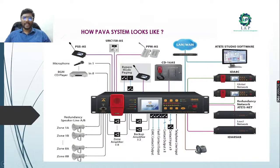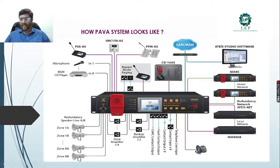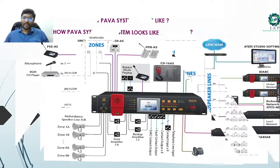The latest PAVA systems have many features: many input types including microphone, BGM, CD players, bypass paging, and mics to connect. Outputs include speakers. Programming is done within the PAVA system, and studio software is available to monitor everything from workstations. A redundancy network ensures that if any failure occurs, the other system immediately takes charge. These latest PAVA systems are widely used where wireless systems are already established.